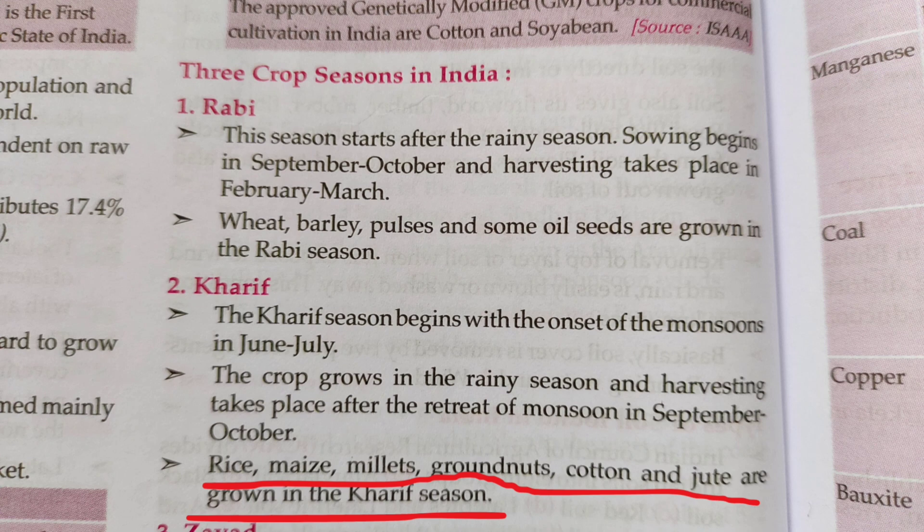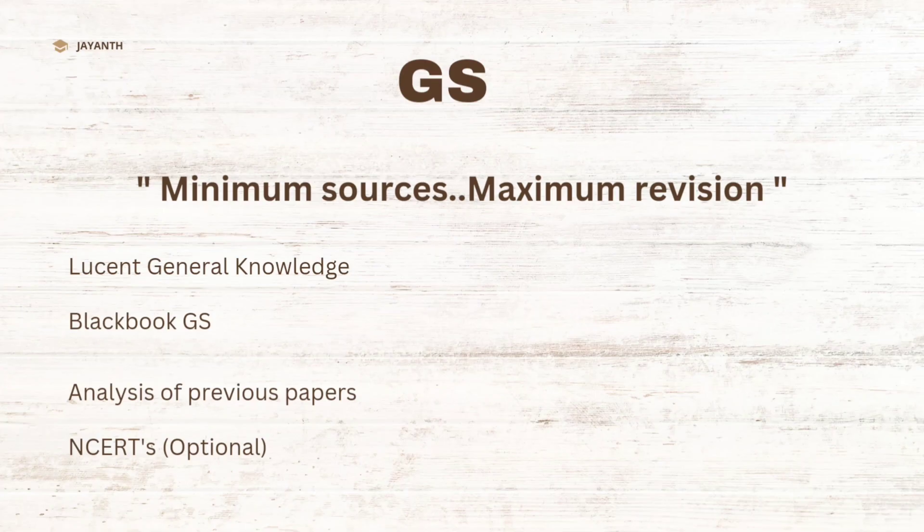Here it is given. See rice, maize, millets, groundnuts are grown in the kharif season. If you read Blackbook GS, you will be able to solve few more questions. Right now I don't have the book with me, else I would have showed you. I am not saying that you can solve each and every question by reading just two books, but you will be able to solve most of the questions. Read theory in Lucent and when a topic is over, go through Blackbook and read all the questions that have been asked by SSC from that particular topic. In this way, try to complete all the topics.